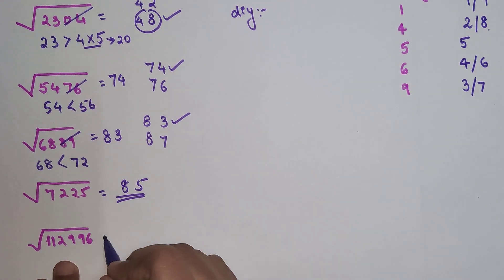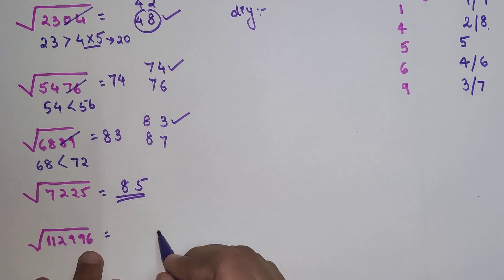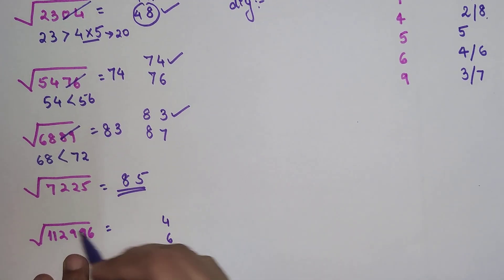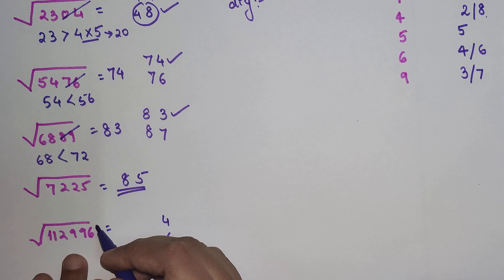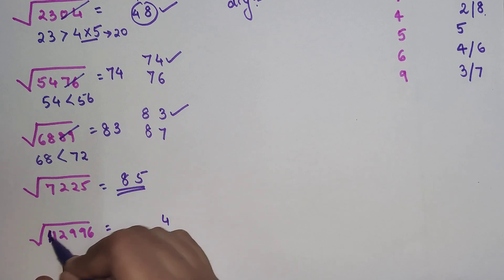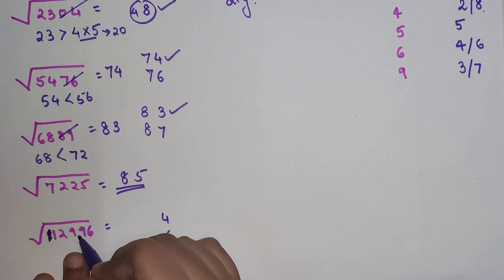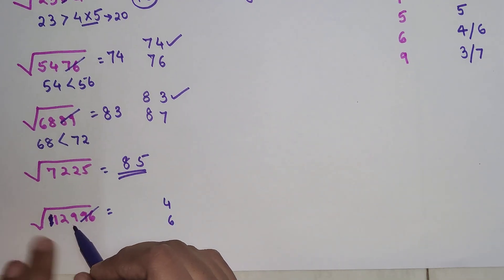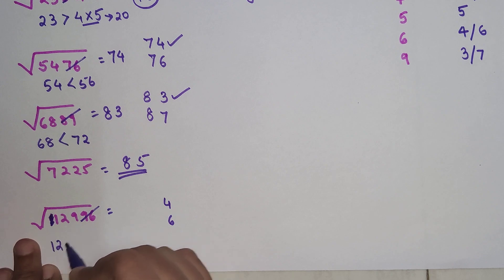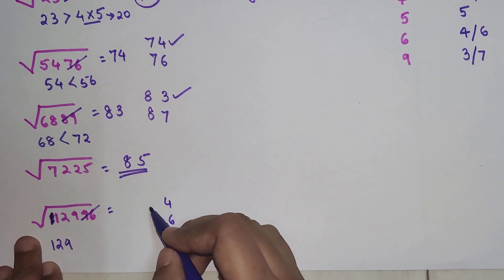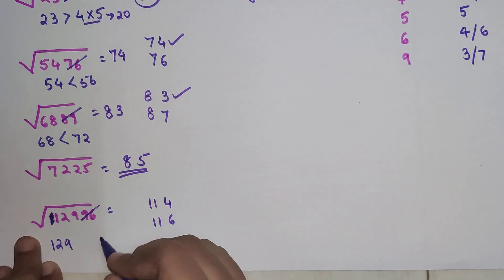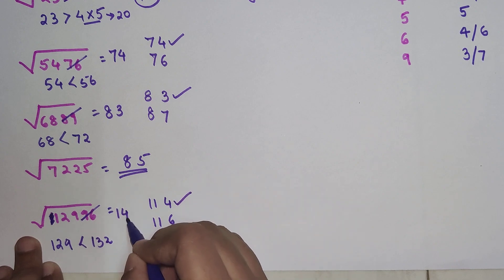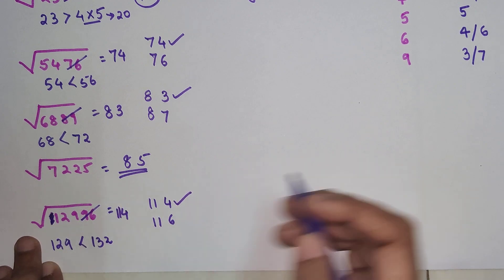Now for a bigger number, 12996. The last digit is 6, so possible unit digits are 4 or 6. Striking out the last two digits gives 129. That is close to 121, which is 11². Multiply 11×12=132. Since 129 is smaller than 132, we take the smaller value, so the square root of 12996 is 114.